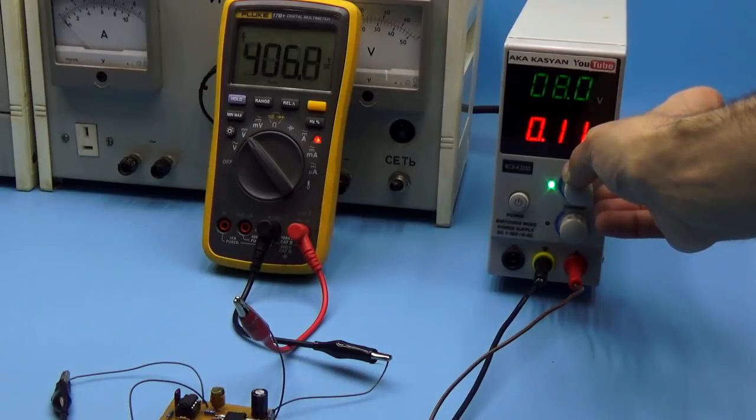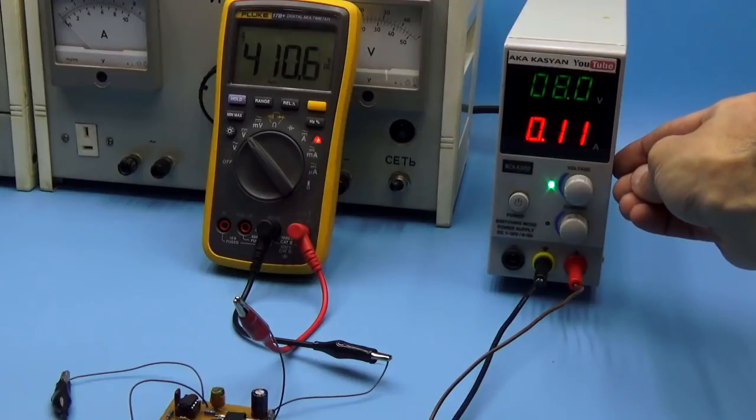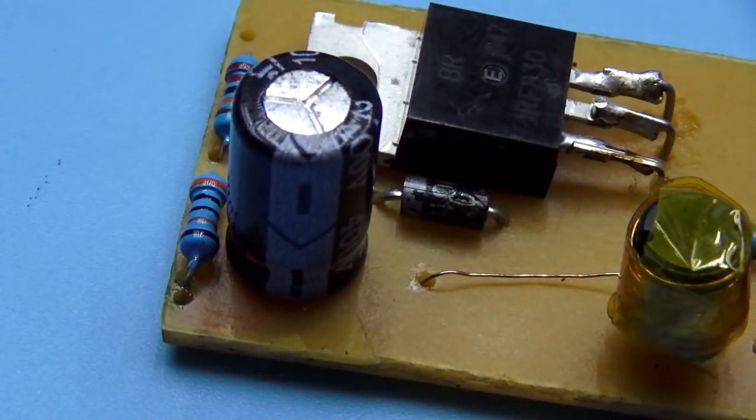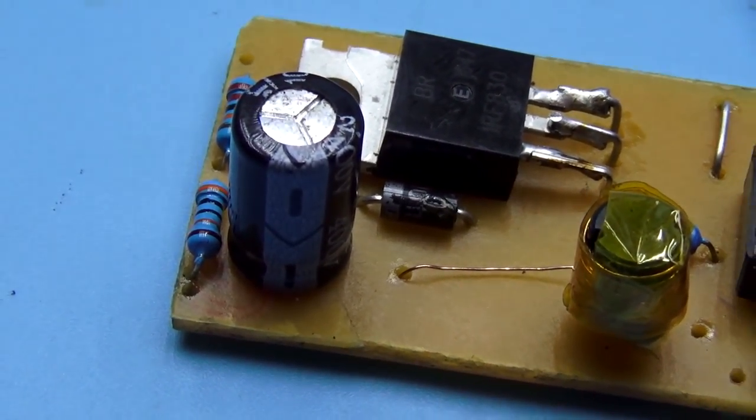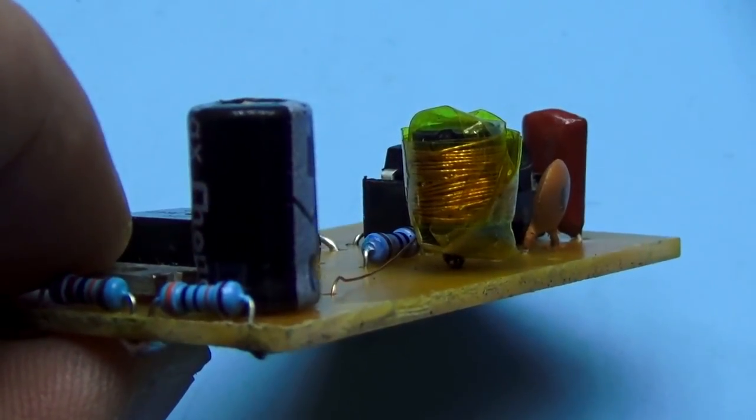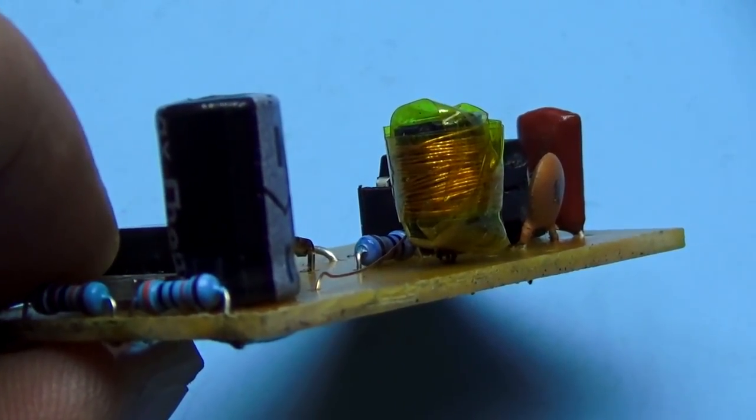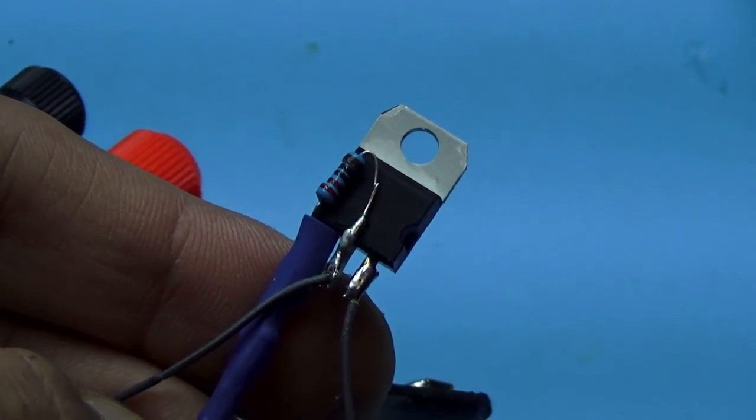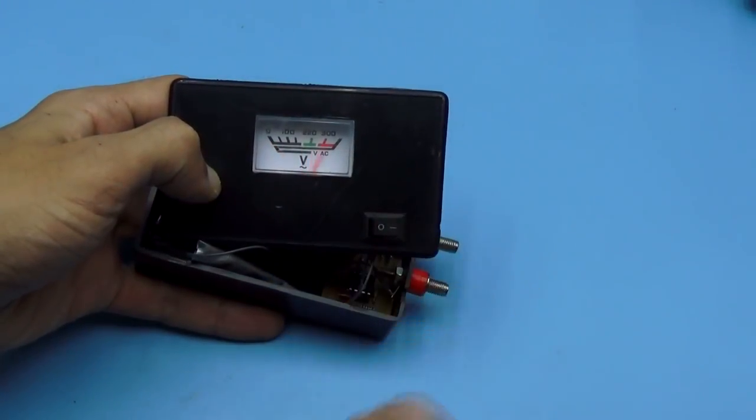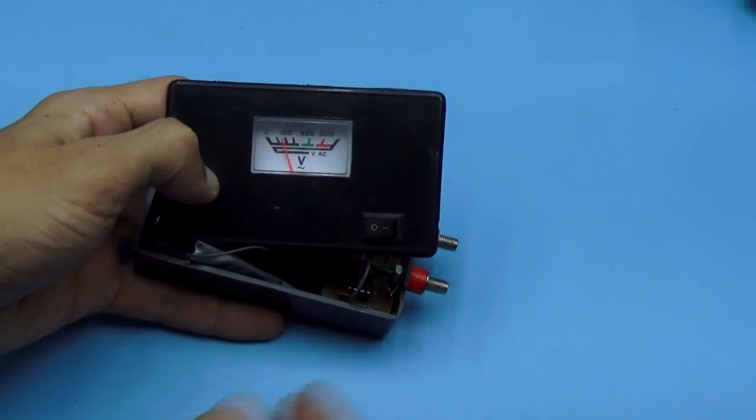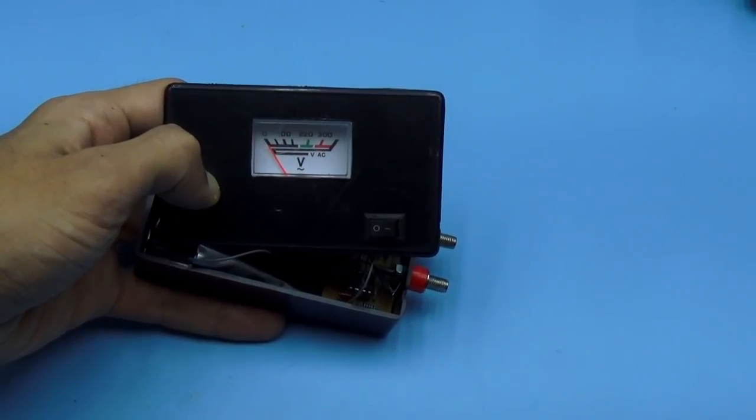But at 8 volts at the input, the output is more than 400 volts. The voltage also depends on the inductance of the choke. The greater the inductance, the greater the voltage. I added a 6-volt linear regulator to the circuit, so the output voltage will be more or less stable regardless of the battery's discharge.